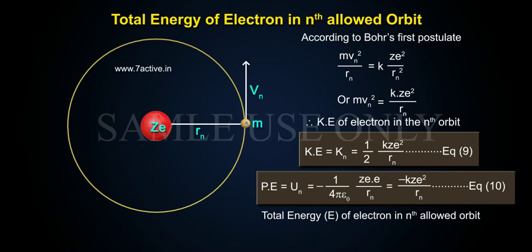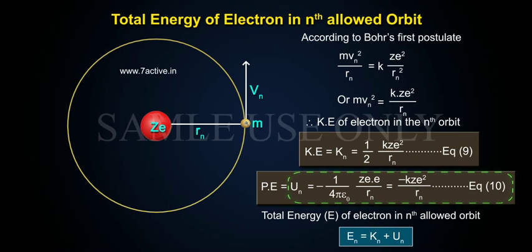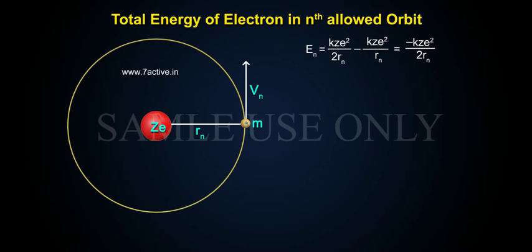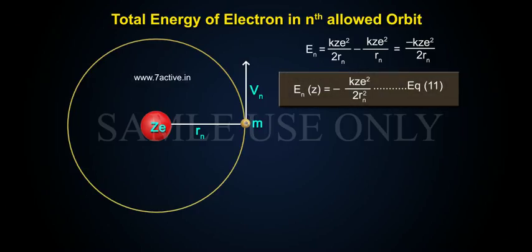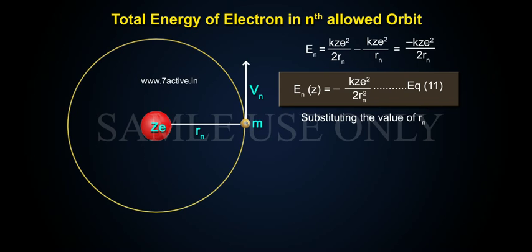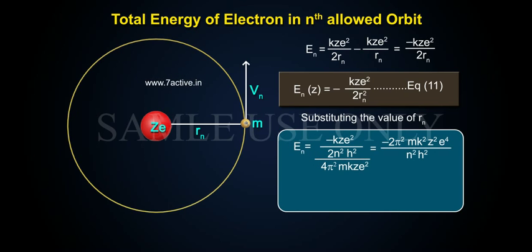Total energy E of electron in nth allowed orbit: En equals Kn plus Un equals kZe²/2rn minus kZe²/rn, equals minus kZe²/2rn. Therefore, En(Z) equals minus kZe²/2rn — Equation 11.